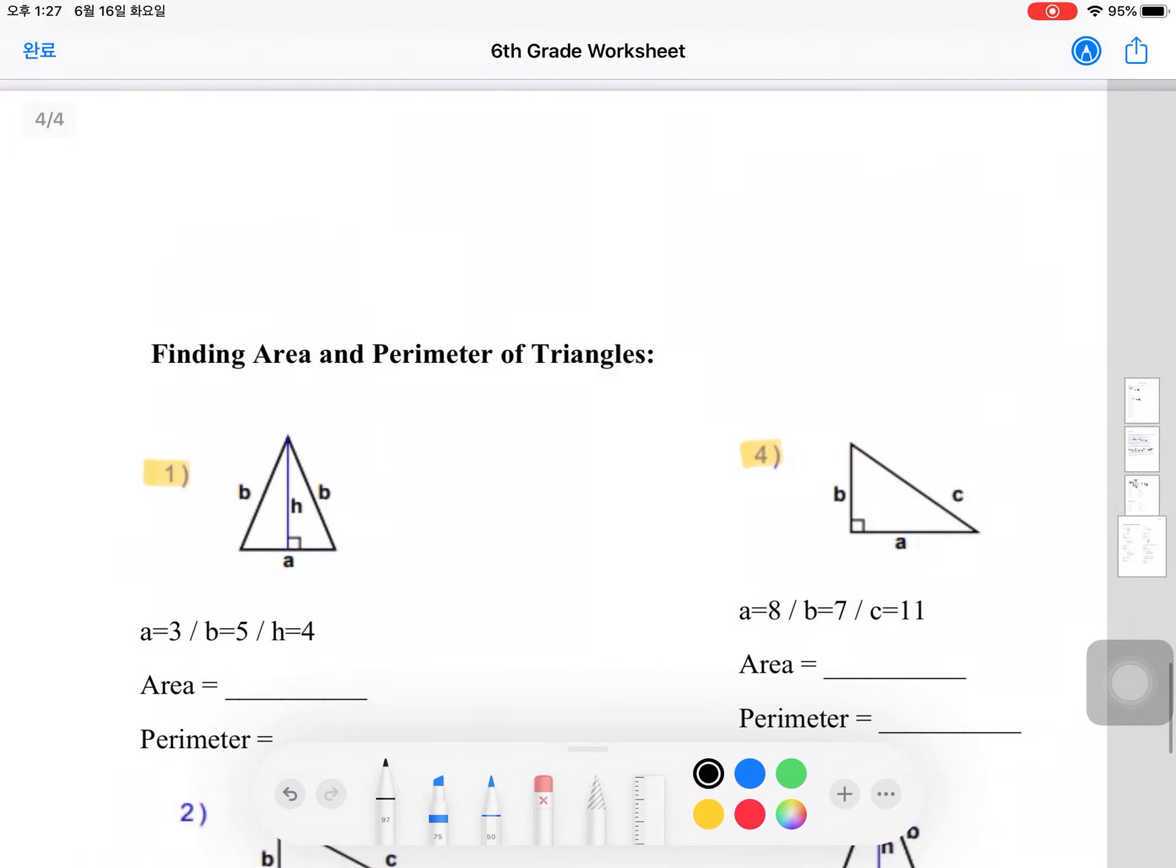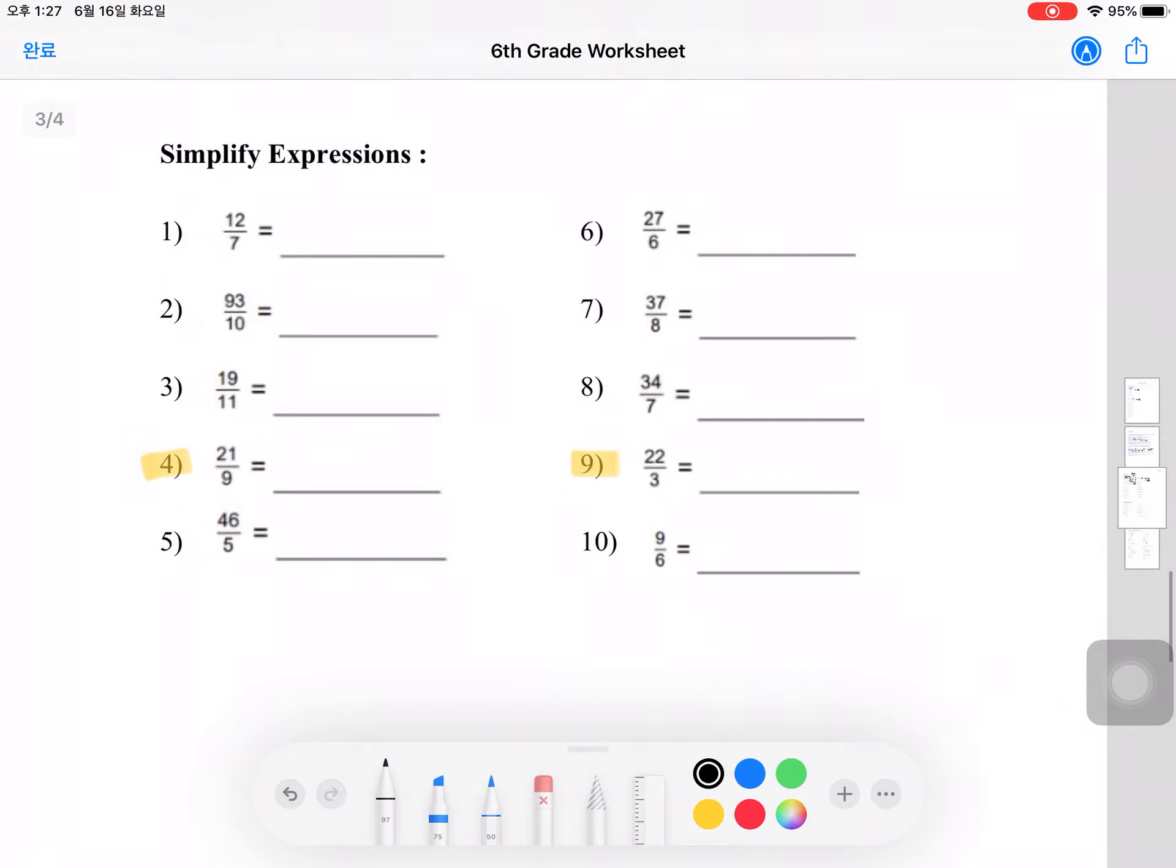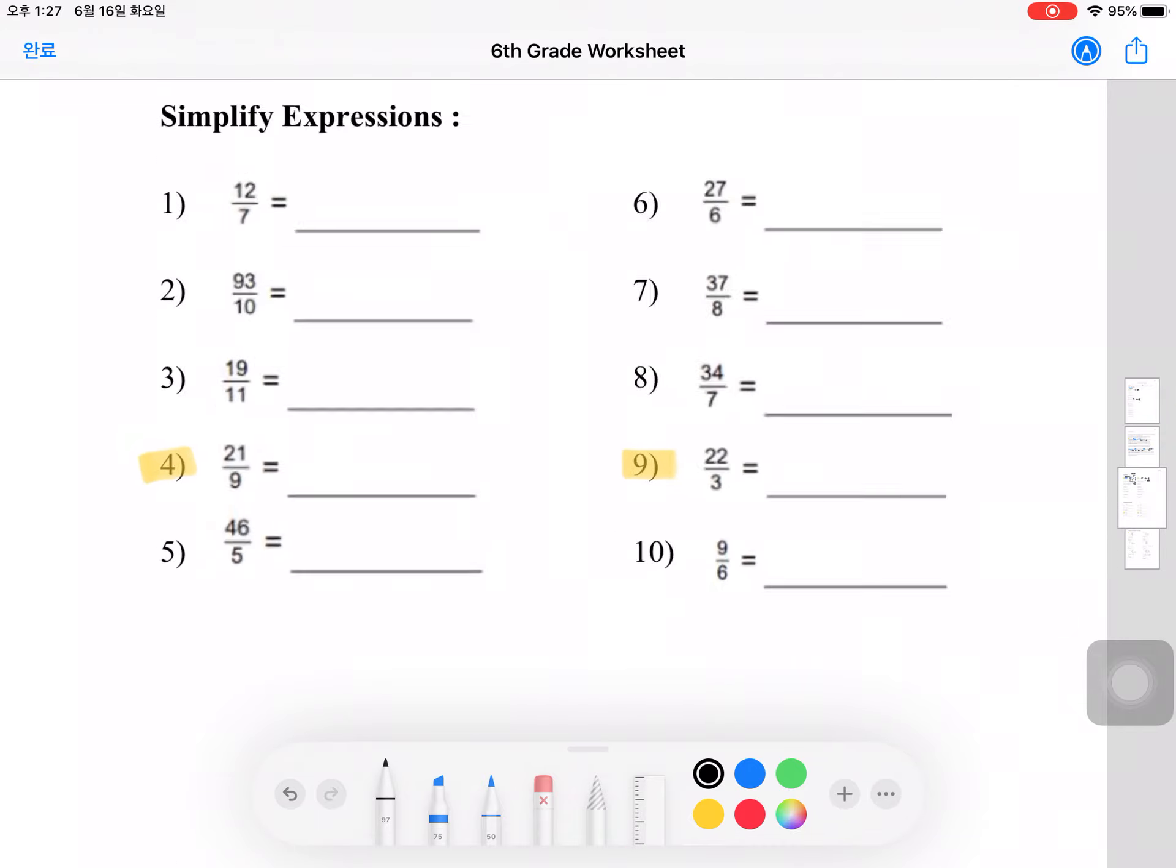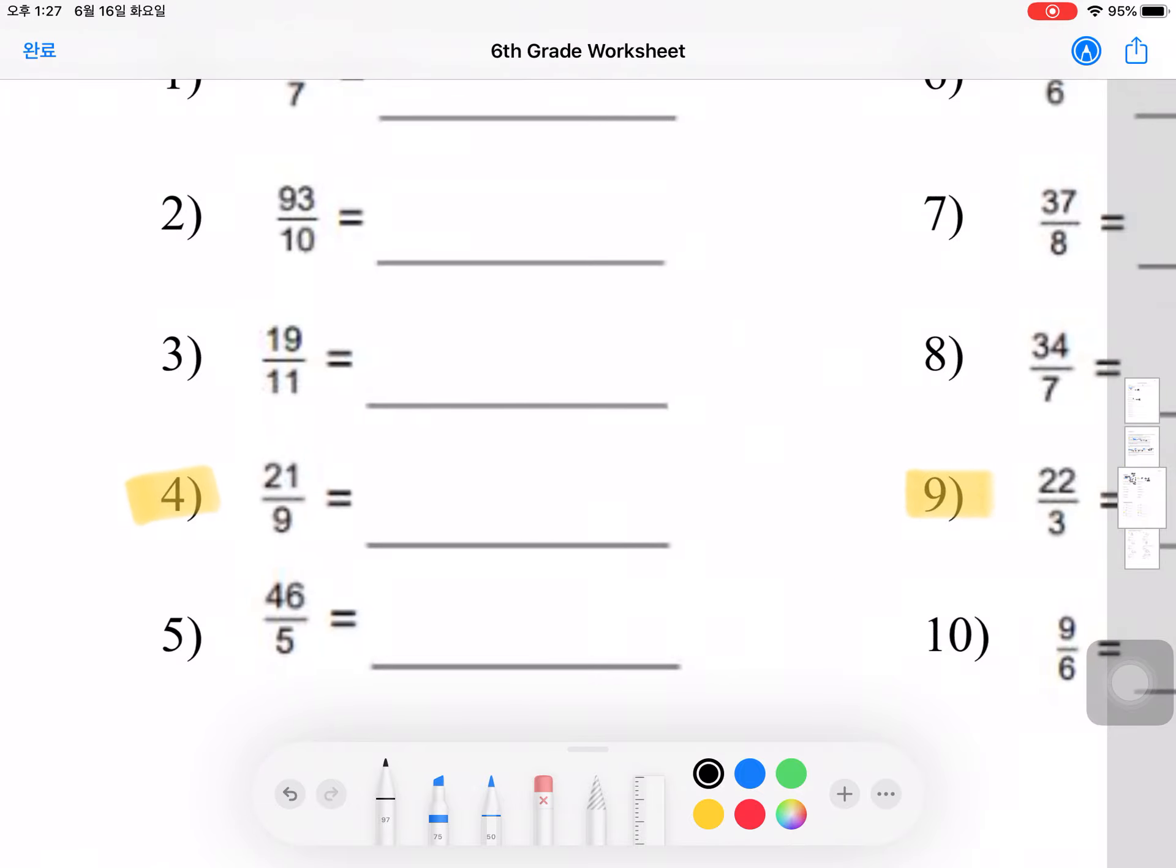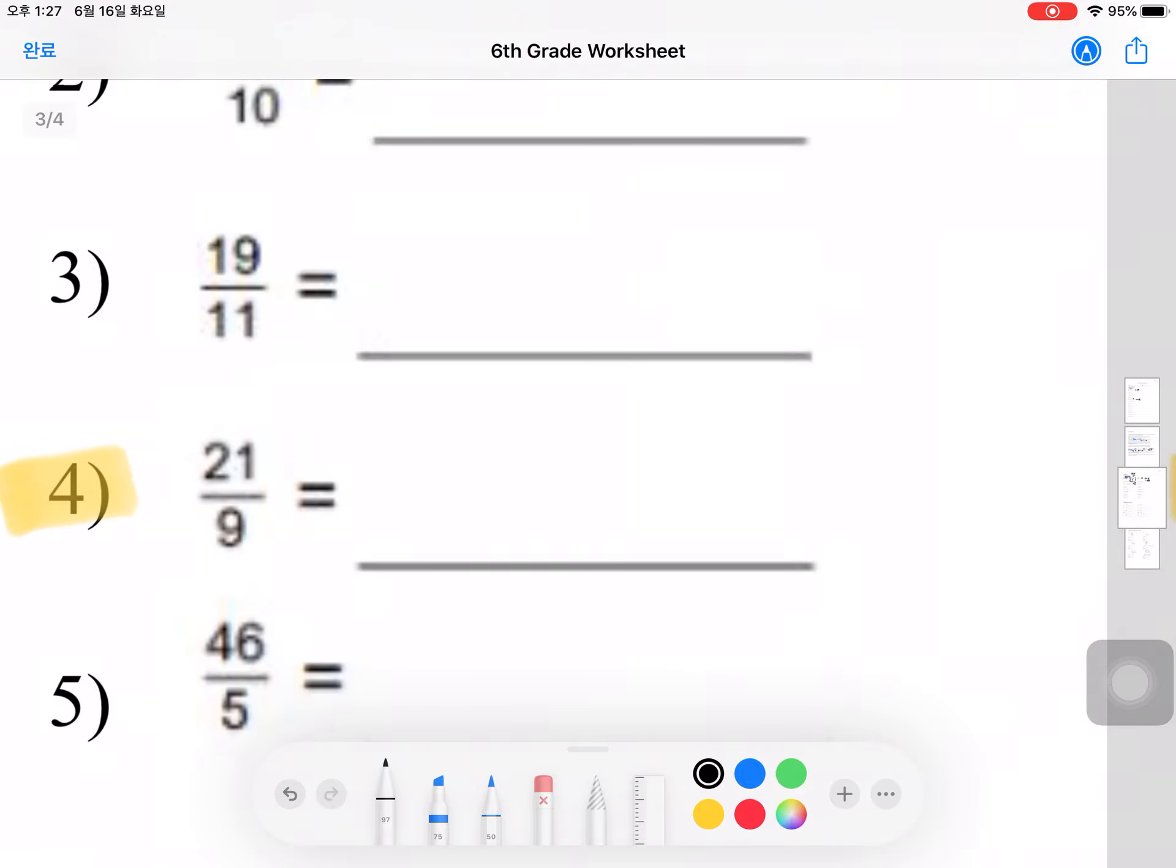Let's go on to the next section, simplifying expressions. I'll be doing 4 and 9 with you. Simplifying expressions just means to divide. So this one would be 21 divided by 9.